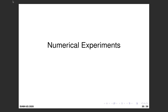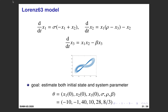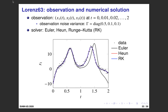Now we show numerical experiments. We show results on the Lorenz model, a three-dimensional ODE. The trajectory looks like the figure shown. For this model, we estimate both the initial state (x10, x20, x30) and the system parameters (sigma, rho, beta) simultaneously. We observe all three variables at discrete time points.